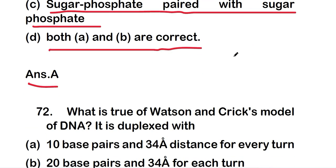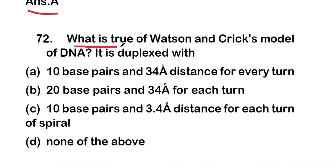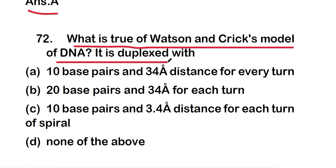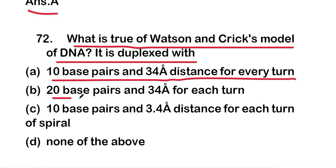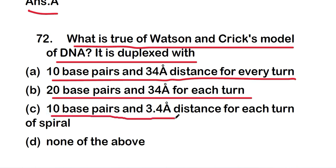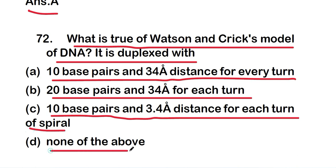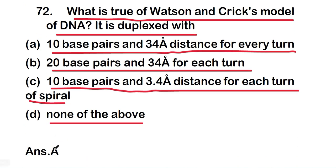Question 72: what is true of Watson and Crick's model of DNA? Option A, 10 base pairs and 34 Ångström distance for every turn; option B, 20 base pairs and 34 Ångström for each turn; option C, 10 base pairs and 3.4 Ångström distance for each turn; or option D, none of the above. The right answer is option A — 10 base pairs and 34 Ångström distance for every turn.